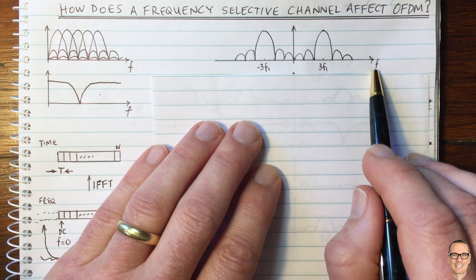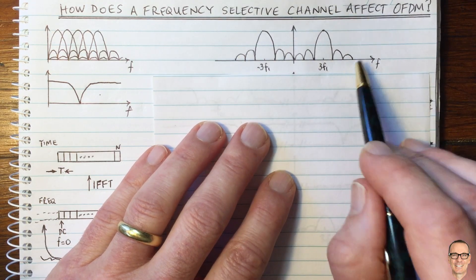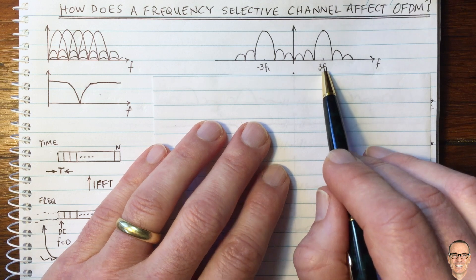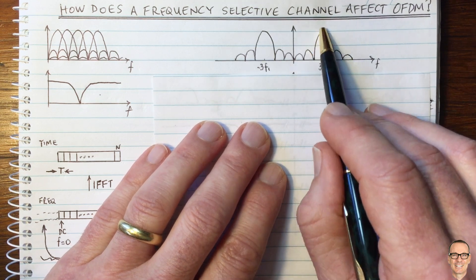So here I'm showing the frequency domain representation of the real part of the signal when data is put in the third subcarrier. And we can see the sync shape here,